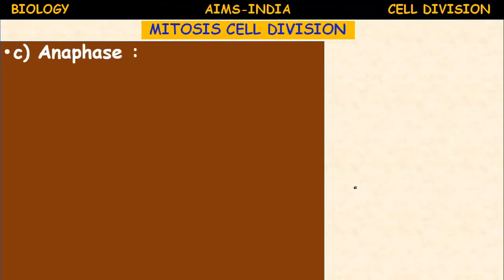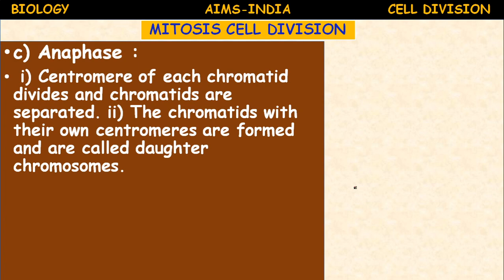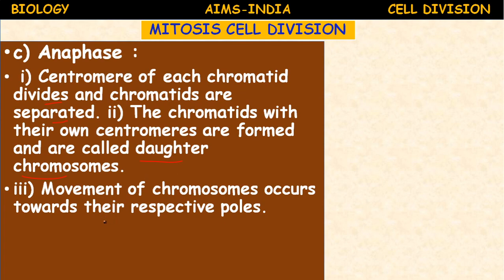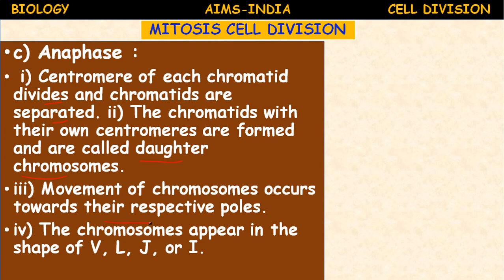The next phase in nuclear division — karyokinesis — is the third phase: anaphase. During anaphase, the centromere of each chromatid divides and the chromatids are separated. Division and separation of chromatids takes place during anaphase. The chromatids with their own centromeres are formed and are called daughter chromosomes. The movement of chromosomes occurs towards their respective poles, and the chromosomes attain different shapes: V shape, L shape, J shape, or I shape.